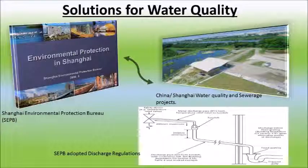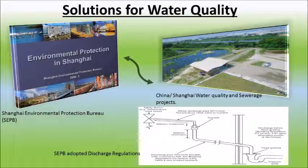The Shanghai Environmental Protection Bureau, also known as SEPB, has implemented water quality and sewerage projects in order to collect industrial and domestic waste water. The SEPB also collected a large number of discharge regulations to prevent any new production activities in areas which will pollute water source protection zones.